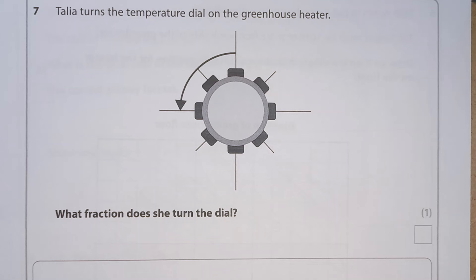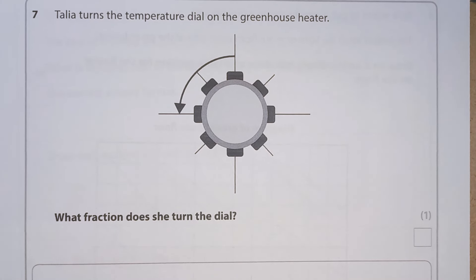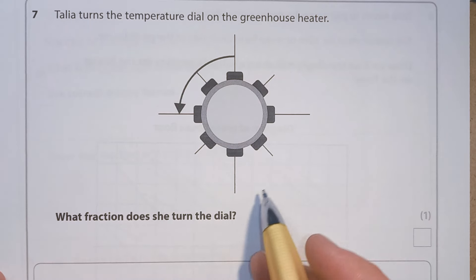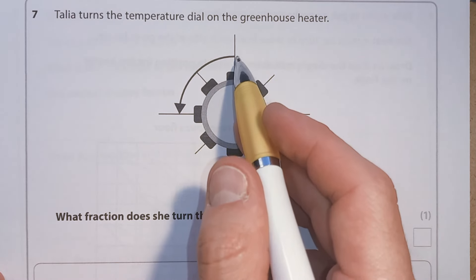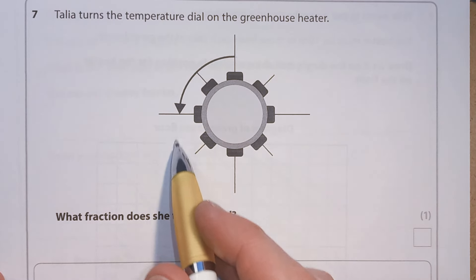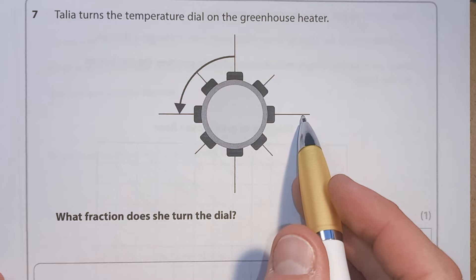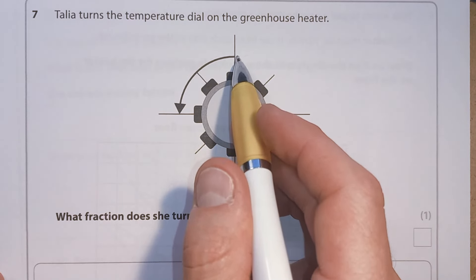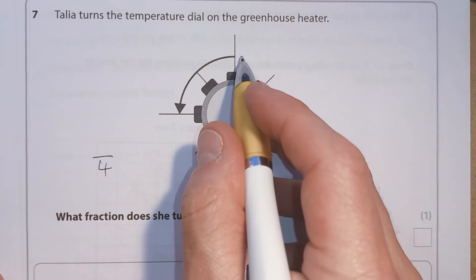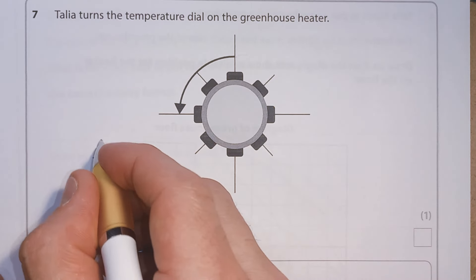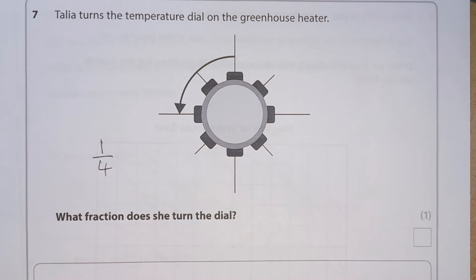Question 7. Talia turns the temperature dial on the greenhouse heater. This would be one complete circle, split into one, two, three, four sections. It's only been turned one section, so it's going to be one quarter.